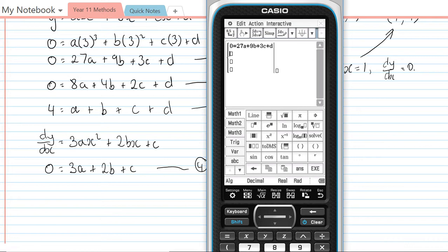The first one is 0 = 27a + 9b + 3c + d. The second equation is 0 = 8a + 4b + 2c + d. The third equation was 4 = a + b + c + d. And the fourth equation 0 = 3a + 2b + c. I'm going to solve that for the variables a, b, c, and d.